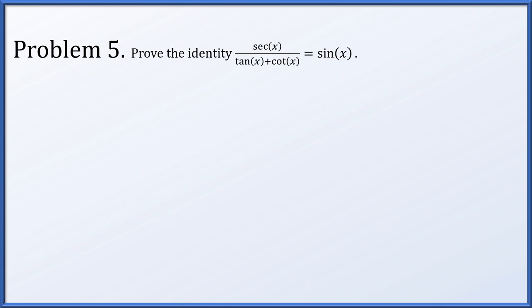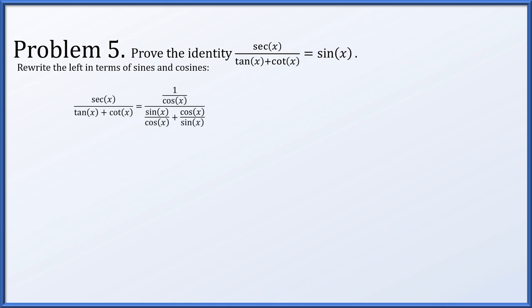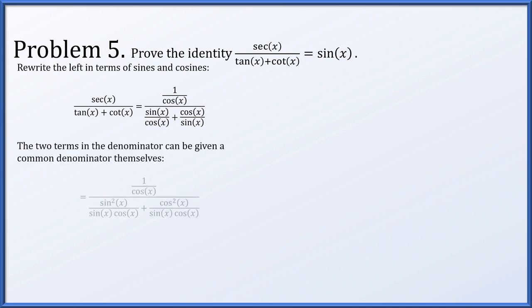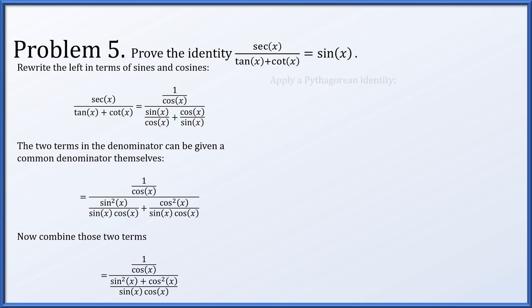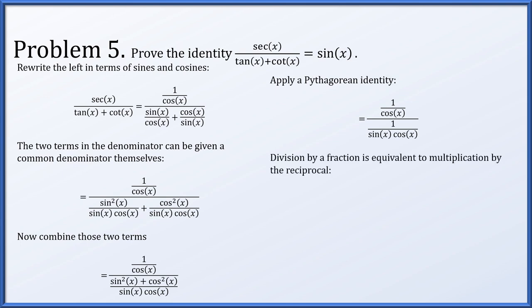Lastly, let's prove the identity: secant x over (tan x plus cotan x) is always equal to sine of x. Taking the left hand side and rewriting in terms of sines and cosines, we get (1 over cos x) all over (sin x over cos x plus cos x over sin x). The two terms in the denominator get a common denominator of sin x times cos x, giving sin squared x plus cos squared x over (sin x cos x). By the Pythagorean identity that numerator equals 1, so the denominator simplifies to (1 over sin x cos x). We then divide (1 over cos x) by (1 over sin x cos x) by multiplying by the reciprocal — (1 over cos x) times (sin x cos x over 1) — and cancel the shared factor of cos x, leaving just sin x.